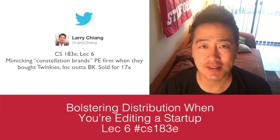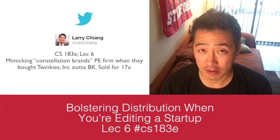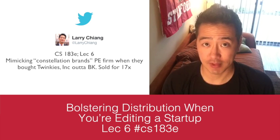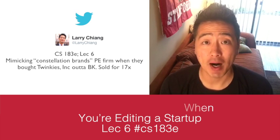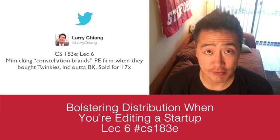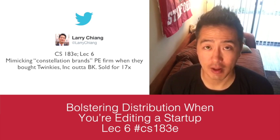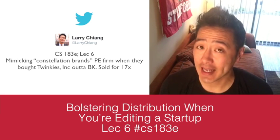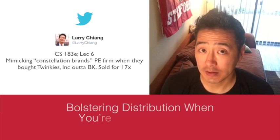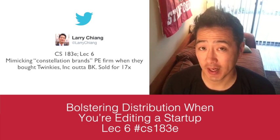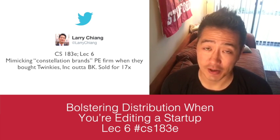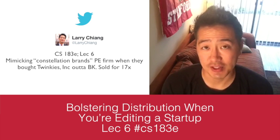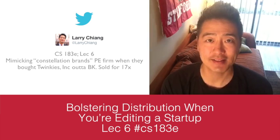For CS183Edit: the company behind Ding Dongs, Twinkies, and Ho Ho's went under. They were bought out of bankruptcy by a PE firm. Guess what they did? One thing — this is what all PE firms do with a turnaround: they focus on distribution, sales, and money in. They got a 9x return for TVPI, total value to paid in. Get distribution — that's the net net of it.